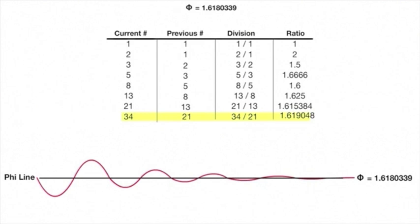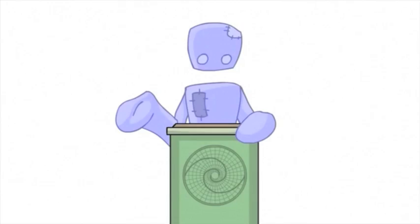It continually oscillates over and under the phi ratio, never quite making it there, but continuing on closer and closer every time until eventually you can't even tell the difference. Because phi is an infinite number, this sequence will go on forever.